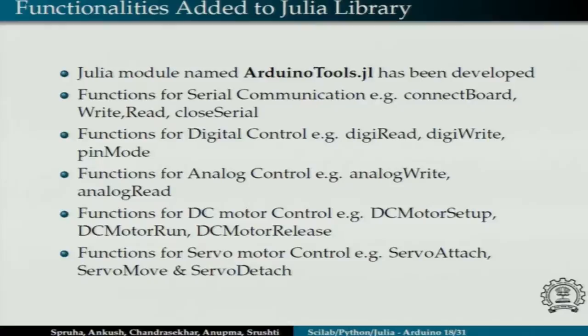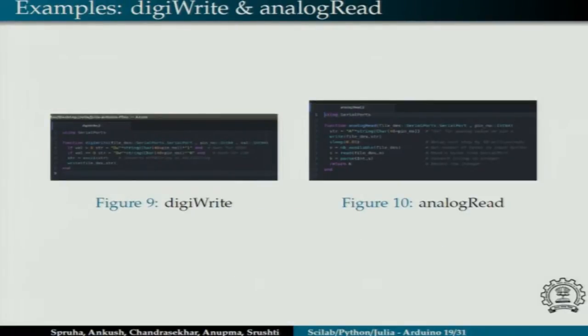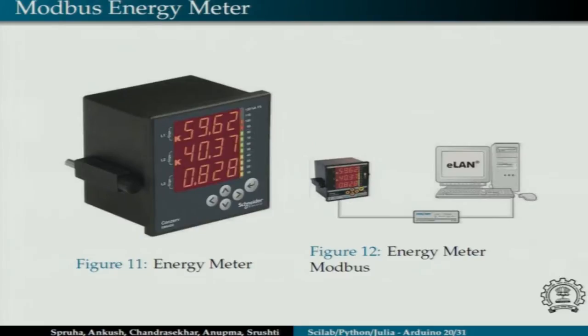Some of the functions include DigiWrite and AnalogRead. DigiWrite writes a digital value on a specific pin, whereas AnalogRead reads the analog value from a specific pin on the Arduino. I have also implemented the toolbox on the Modbus energy meter, which sends back real-time electrical data like power, voltage, or current, and I have developed functions to read these parameters in Julia. This basic toolbox has also been used by my co-interns to implement their experiments.